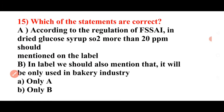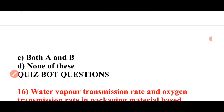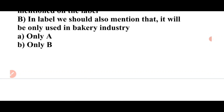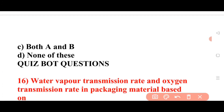Next question: Which of the statements are correct according to FSSAI regulation? Statement A: In dried glucose syrup, more than 20 ppm should be mentioned on the label. Statement B: The label should also mention that it will only be used in a bakery industry. Options: only A, only B, both A and B, none of the above. Answer: None of these is the correct answer.